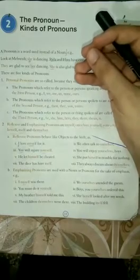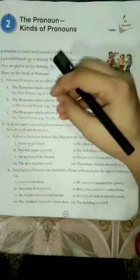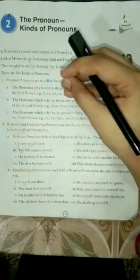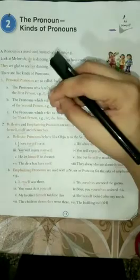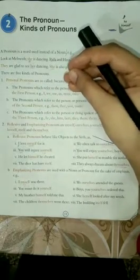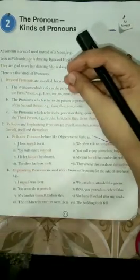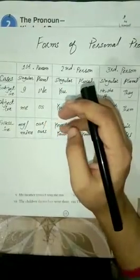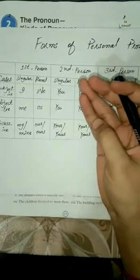In other words, the third person refers to the one about whom the conversation is being carried on — that person is the third person. Now, there are three cases of personal pronouns: the first is subjective case, second is objective case, and the third is possessive case.